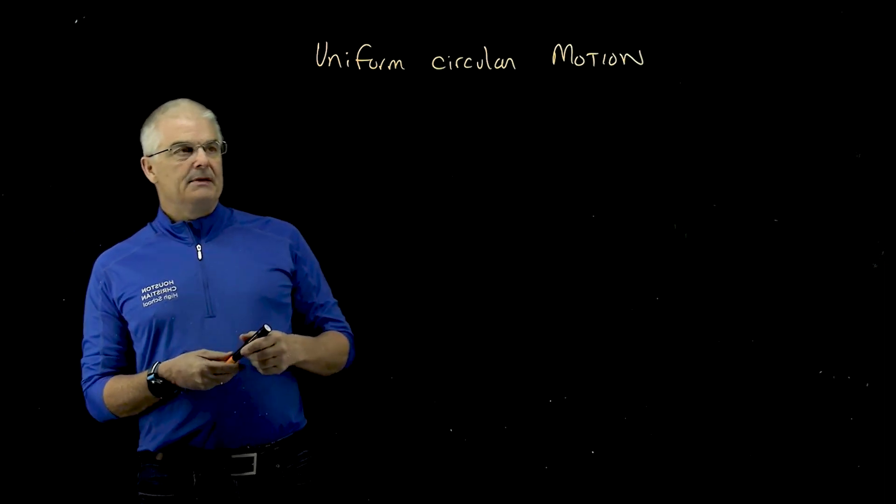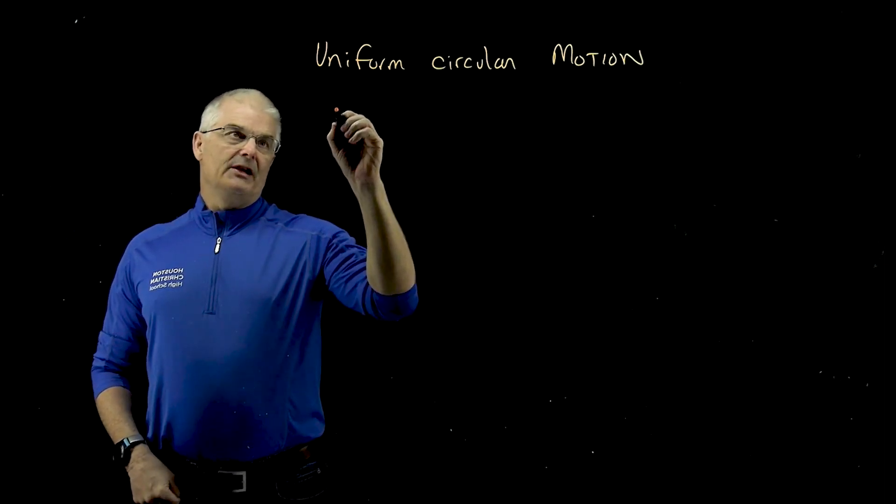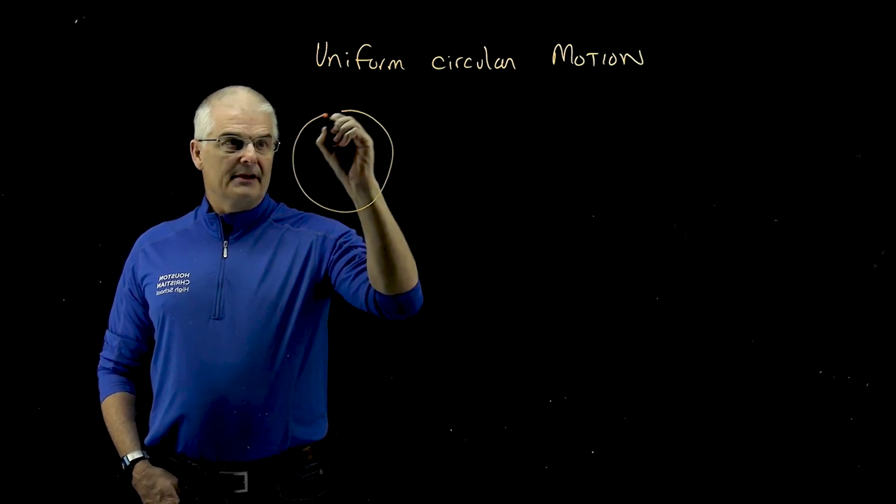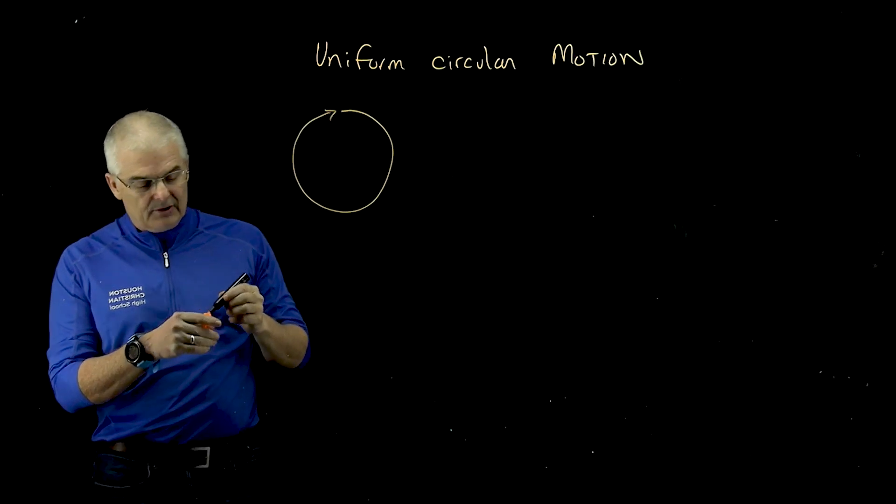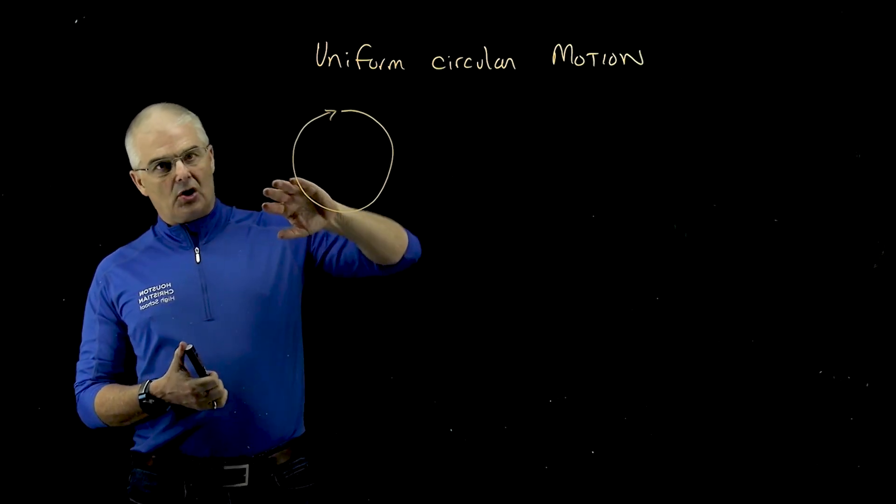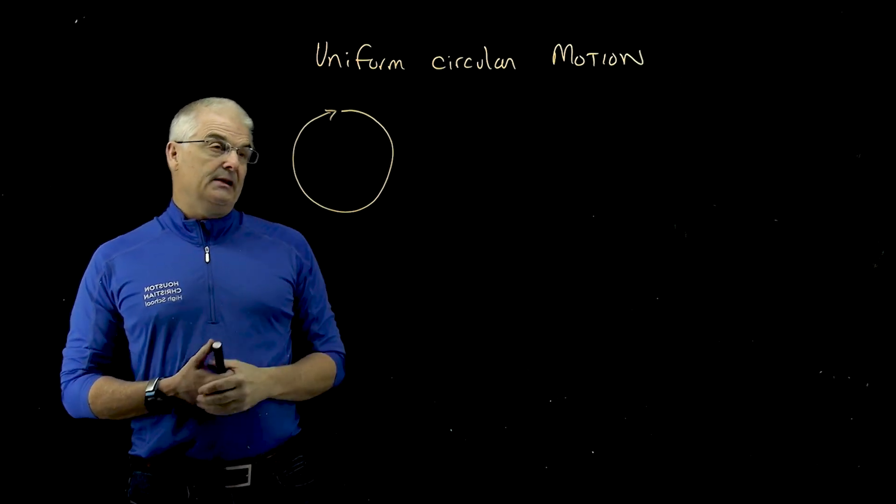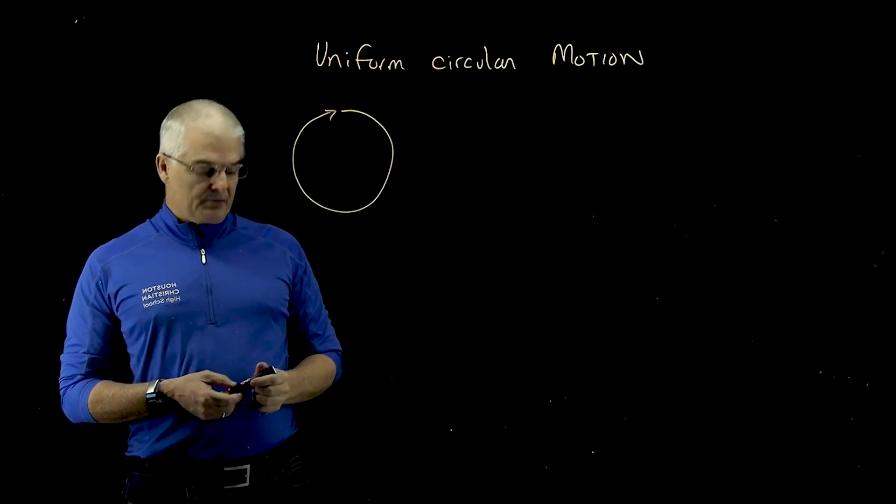So what does that mean? That means you've got an object that's moving uniformly in a circle. So you've got something moving in a circle. By the way, they don't always have to travel in a full circle. You could have a car that's going around a bend, a circular bend. And those are like a lot of types of problems that we're going to see.